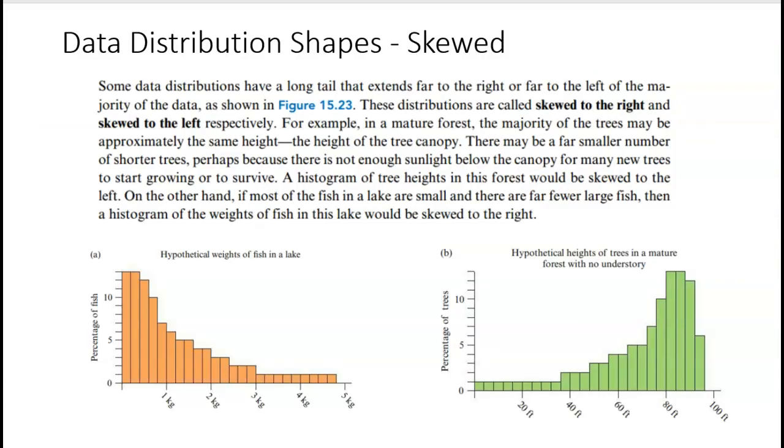Let's first talk about skewed data distribution. When we talk about skewed, we're looking at those data distributions with a long tail that extends to the right or to the left. These are called skewed to the right if the tail is all the way to the right, and skewed to the left. We're kind of looking at this tail here. This would be skewed to the right, and this would be skewed to the left.